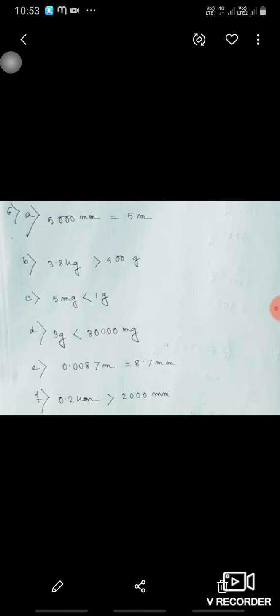5 milligram or 1 gram, 1 gram is greater. 3 gram or 3000 milligram, 3000 milligram is greater. 0.087 meter and 8.7 centimeter, so both are equal. 0.2 kilometer and 200 milliliter, so 0.2 kilometer is greater.